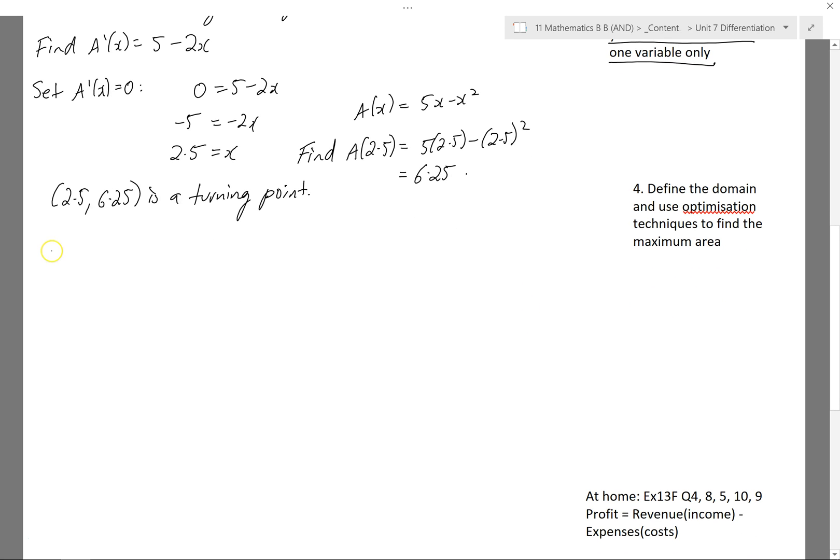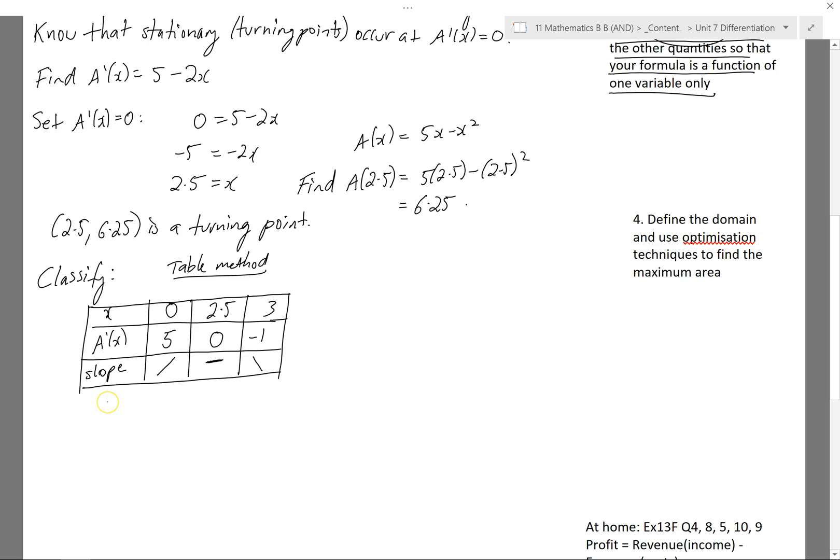Again, not sure which one it is, so I better classify it. There's all different ways you can go about classifying this. You might want to do the table method. Remember in the table method, we're looking at the slope, so substituting into A', these three points, one point either side of our turning point. And we can see that on the left hand side or the negative side of the point, it's positive, then flat, then negative. So I can classify that 2.5, 6.25 is a maximum.